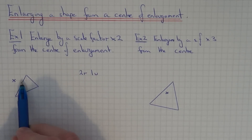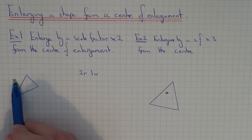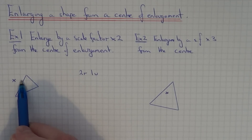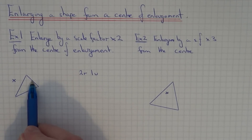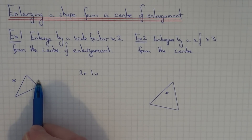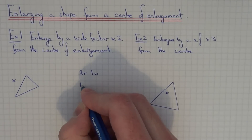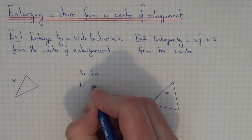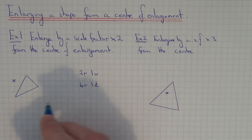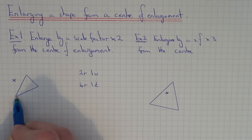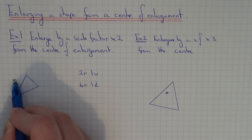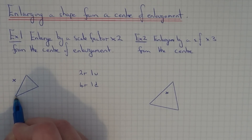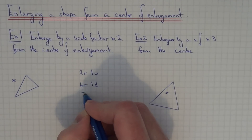Let's do the next corner — again count from the centre to the corner. That's four right and one down. Make a note of that. And the last corner: from the centre to that corner it's just three squares down.